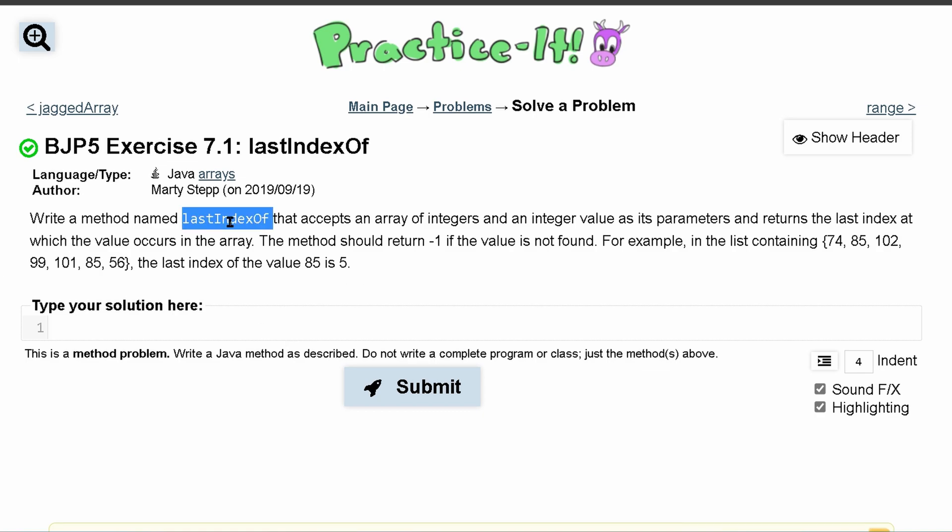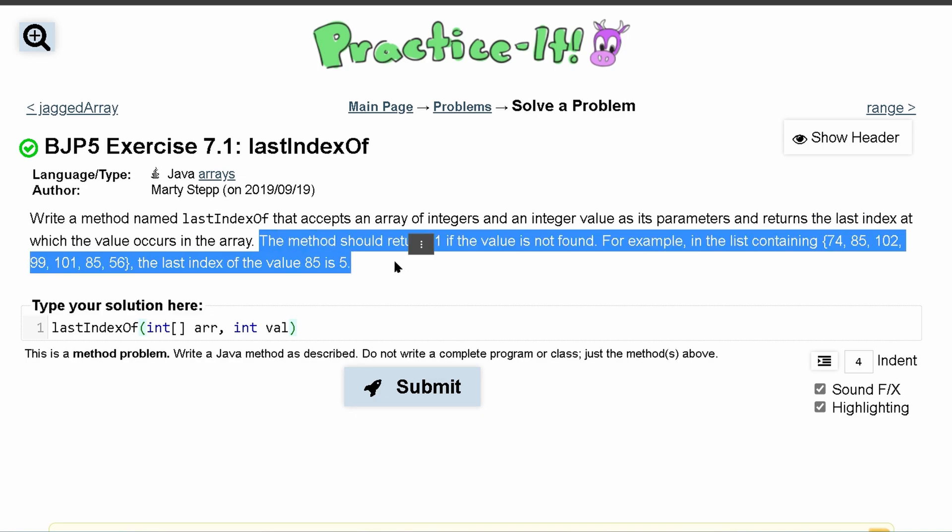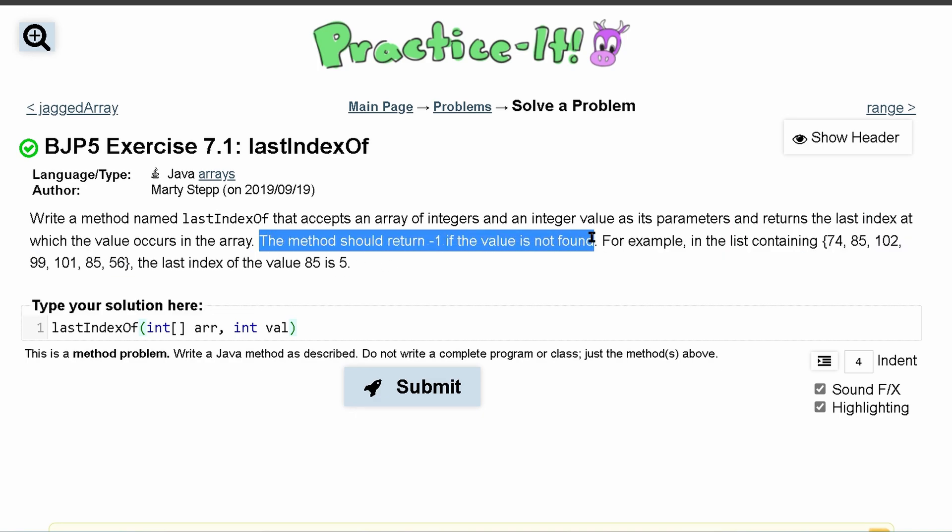We are going to write a method named lastIndexOf that accepts an array of integers and an integer value as its parameters. It returns the last index at which the value occurs in the array, and our method should return negative one if the value is not found.